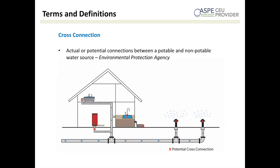A cross-connection, as defined by the EPA, is any actual or potential connection between the public water supply and a source of contamination or pollution. These cross-connections can jeopardize the cleanliness and potability of the public water system in a backflow or back siphonage event. An actual connection is a direct connection to a source of contamination — for example, a boiler feed water makeup line connected directly to a hydronic heating system. A potential connection is something like a hose on the outside of the house that could at any time be connected to a pesticide sprayer.